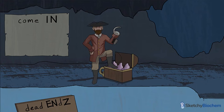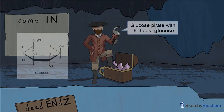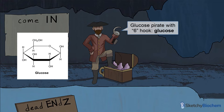Glucose crosses the cell membrane via GLUT membrane proteins. Our six-buttoned robot pirate with his foot on this treasure chest represents glucose. From here on out, any pirate with six buttons signifies a six-carbon molecule — six buttons, six carbons, just like six-carbon glucose.